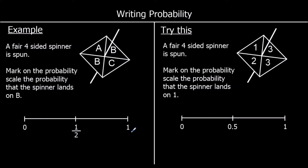Here's a question. A fair four-sided spinner is spun. It says it's fair, which means there's an equal chance of it landing on each side. Mark on the probability scale the probability that the spinner lands on B. There are four sides, and two of them have a B on them. So two out of four, or two quarters, which simplifies to one-half. So the probability of the spinner landing on B is one-half. We mark that on the scale at one-half.